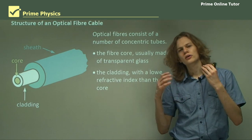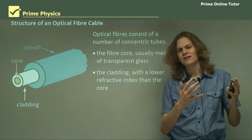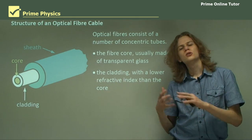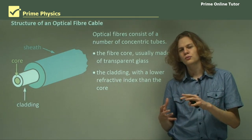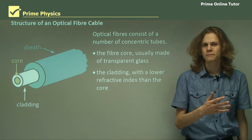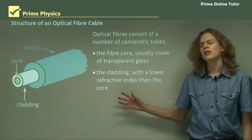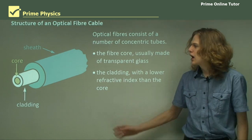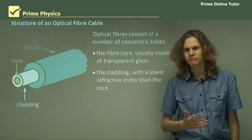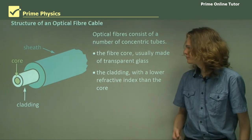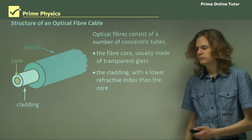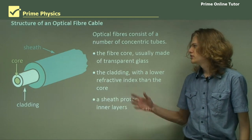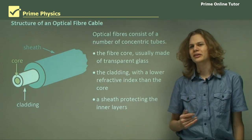Just like if we're going from water into air and getting total internal reflection, it's because the water has a higher refractive index than the air. So in this case the cladding needs to be like the air in that situation and the core like the water. And finally, to protect it all, we have a sheath, and the sheath just prevents the inner layers from becoming damaged.